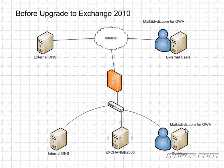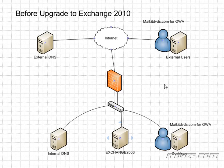The same goes for internal users — they're going to use Outlook Web Access or Outlook to access their mailbox, and that request goes directly to the Exchange server. For mail delivery, external mail servers make the request through the Internet, send the email through the firewall, and send it directly to the Exchange 2003 server.